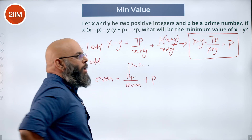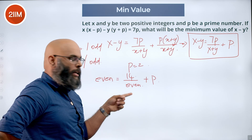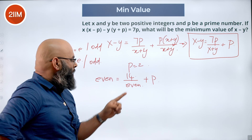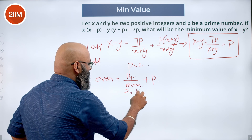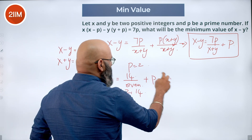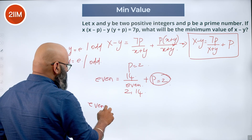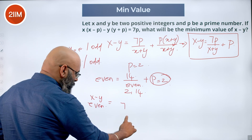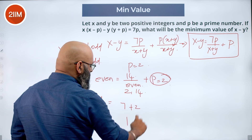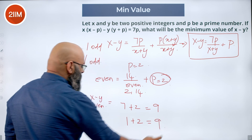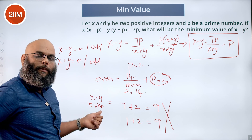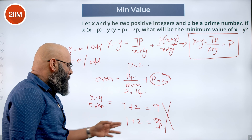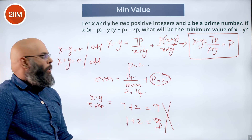With p equal to 2, 7p becomes 14. I have to divide 14 by an even number and get an integer. The only even divisors of 14 are 2 and 14. Dividing 14 by 2 gives 7, and 14 divided by 14 gives 1. Adding p equals 2 in both cases: 7 plus 2 is 9 and 1 plus 2 is 3 — both odd. But x minus y was assumed even, so this case doesn't work. Therefore x minus y cannot be even.